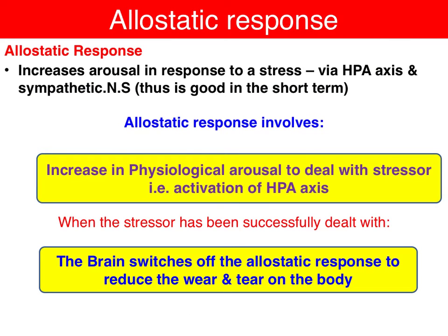When we encounter a stressor, the allostatic response will be initiated via the HPA axis — hypothalamus, pituitary gland, adrenal cortex — and the sympathetic nervous system to help us deal with that stressor. And when we have successfully dealt with it, the brain will switch off the allostatic response to reduce the wear and tear on the body.